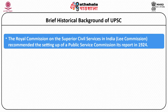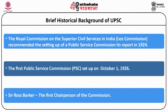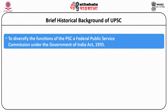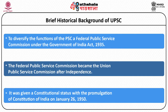The public service commission in India was first set up by the British. In 1924, the Lee Commission recommended setting up an impartial and transparent body. In 1926, the British government set up a public service commission for the union government to recruit civil servants. With the Government of India Act 1935, separate commissions were established for both the union and state governments. After independence, the same pattern was followed, with the only difference being that the Federal Public Service Commission was renamed the Union Public Service Commission.